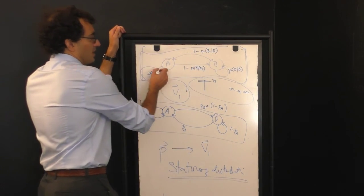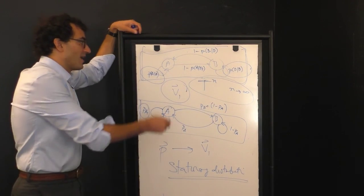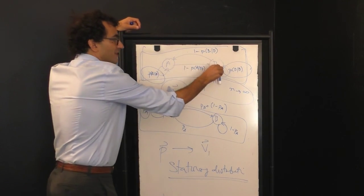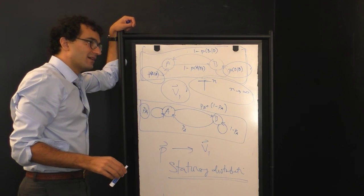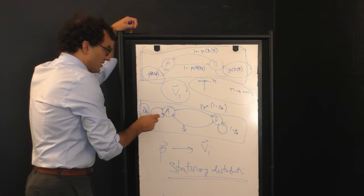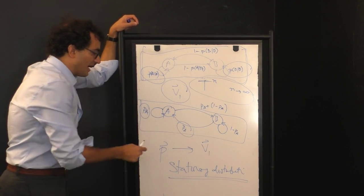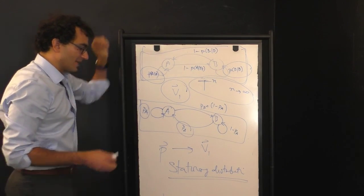You move from models that exist in a two-dimensional space, where I have to tell you the self-loop probabilities for each of these individual states, if you coarse-grain enough, that takes you to a set of models that can be described by a single probability, P A.